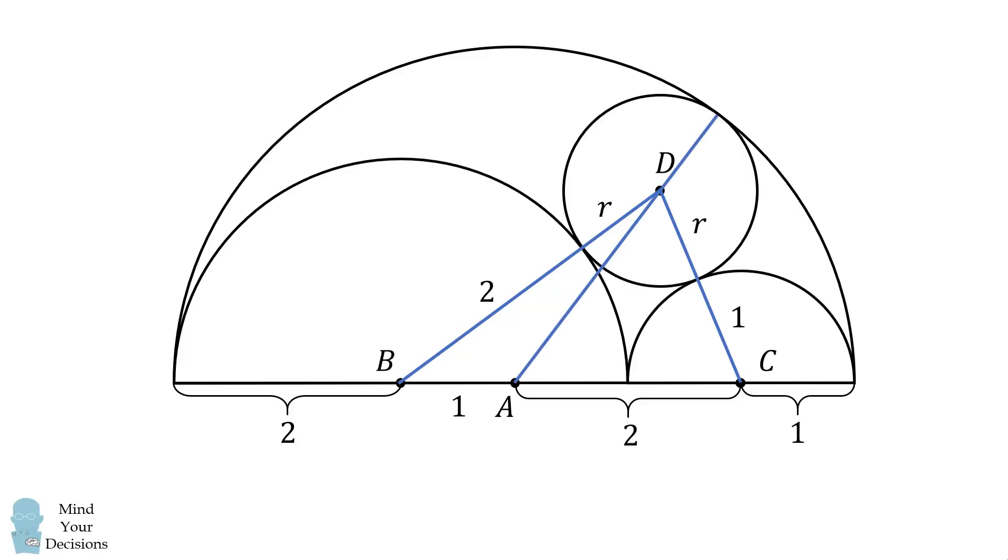Now, construct a line through AD and the tangent point between A and D. This entire length will be equal to the radius of A, which is equal to 3. Since circle D has a radius of r, the distance between A and D will be 3 minus r.